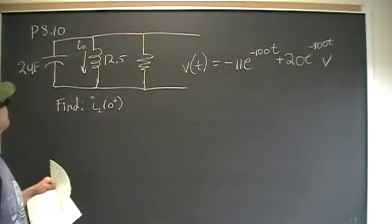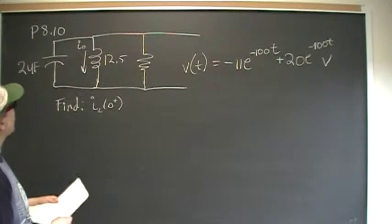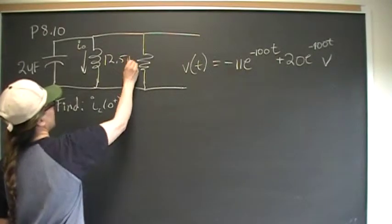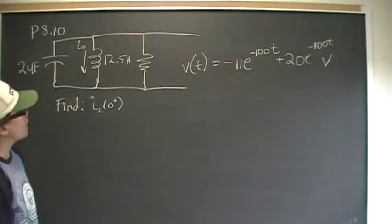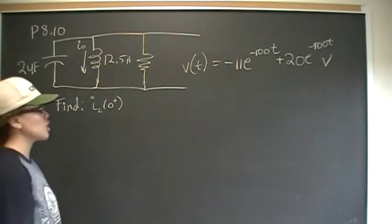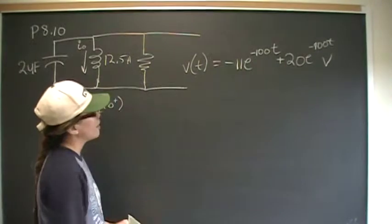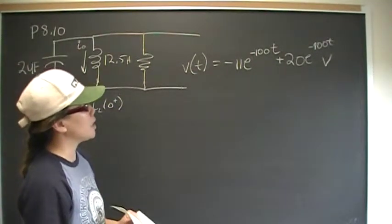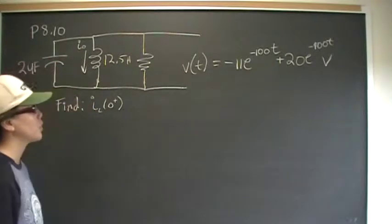Okay, so this is problem number 10 from chapter 8. We have a parallel RLC circuit, 2 microfarads for capacitance, 12.5 Henrys for inductance, and the resistance is unknown. We have the voltage equation, general equation negative 11e to the negative 100t plus 20e to the negative 400t volts.